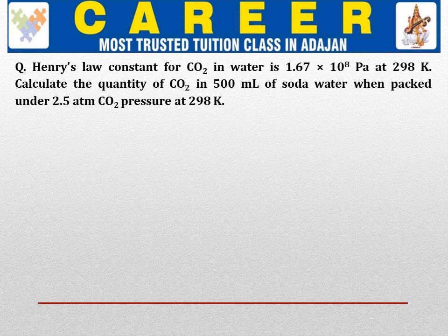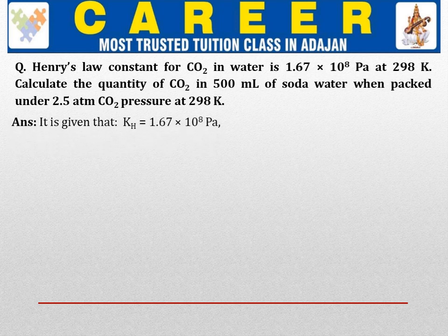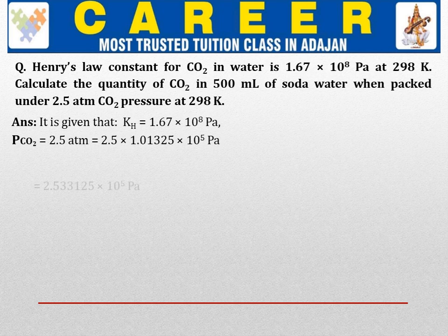Now the next numerical. Henry's law constant for carbon dioxide in water is KH = 1.67 × 10⁸ Pascal at 298 Kelvin. Calculate the quantity of carbon dioxide in 500 ml of soda water when packed under 2.5 atmospheric pressure. KH = 1.67 × 10⁸ Pascal. The pressure is given as 2.5 atmosphere, so we first convert it to Pascal: 2.5 × 1.01325 × 10⁵ = 2.53 × 10⁵ Pascal.